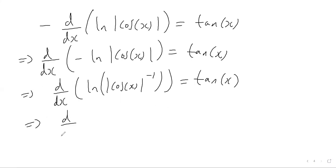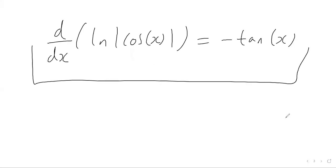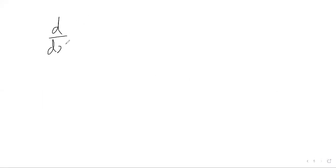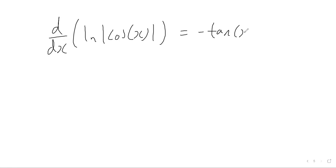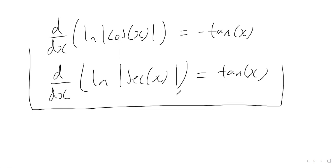So to conclude: when we differentiate with respect to x the function ln modulus of cos x, we get negative tan x. And when we differentiate ln modulus of sec x with respect to x, we get positive tan x. These two results are the key results to take away from today's video.